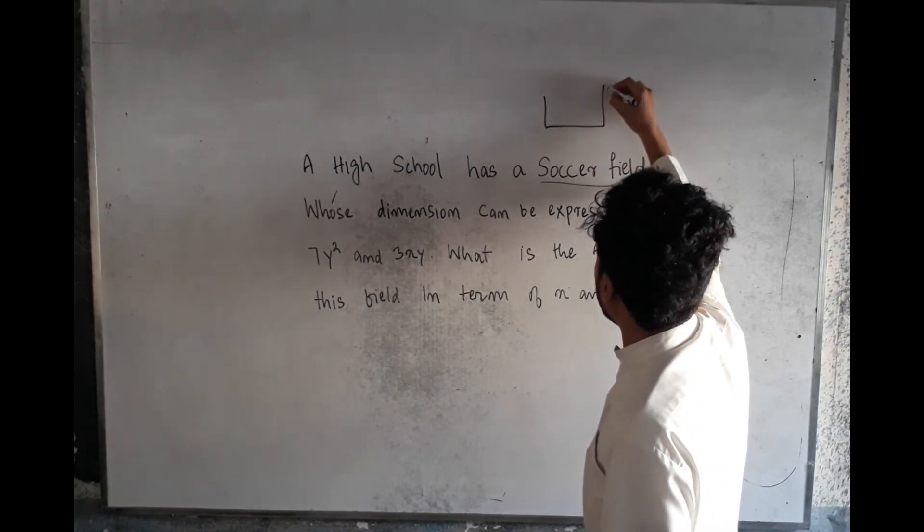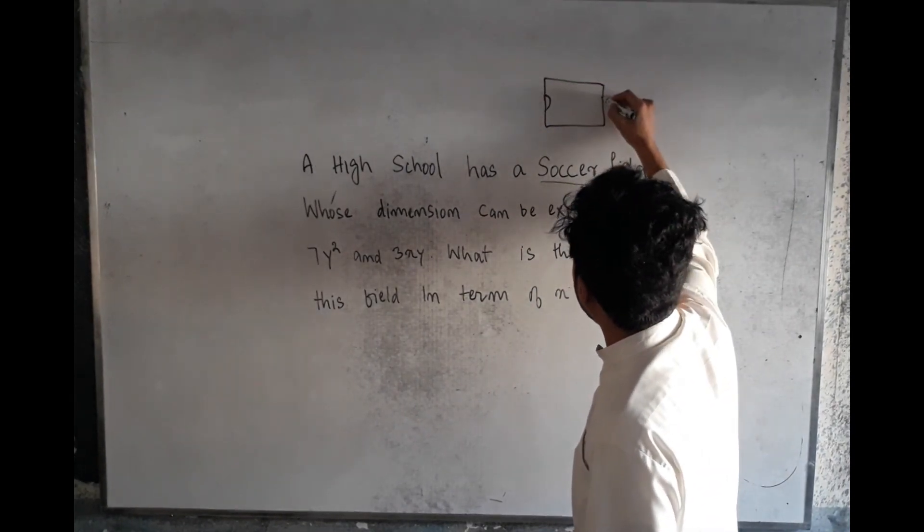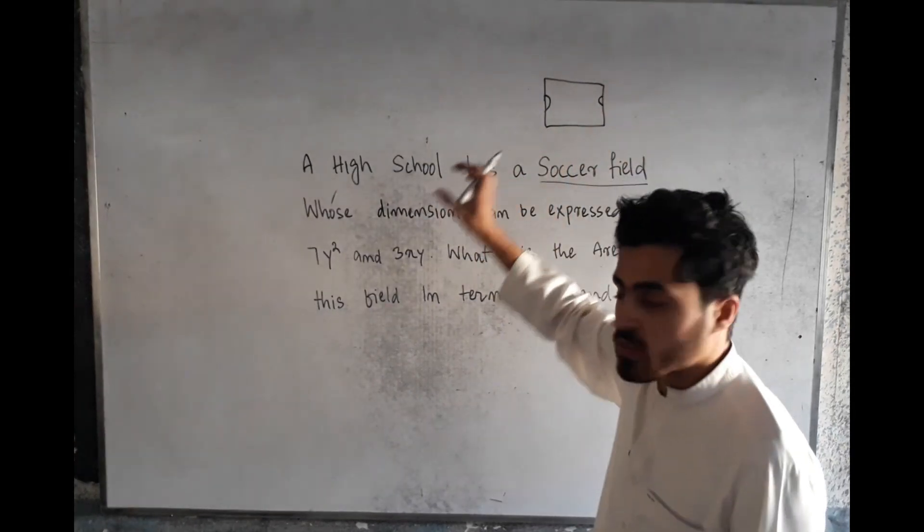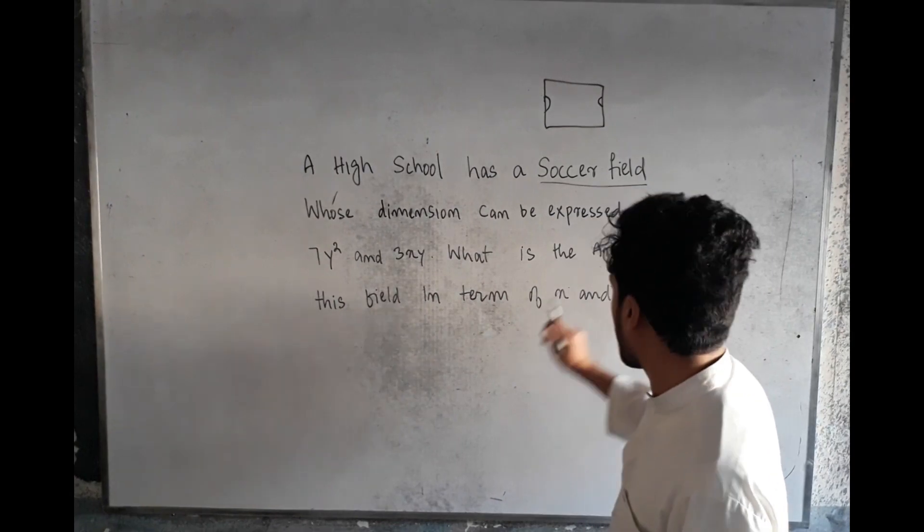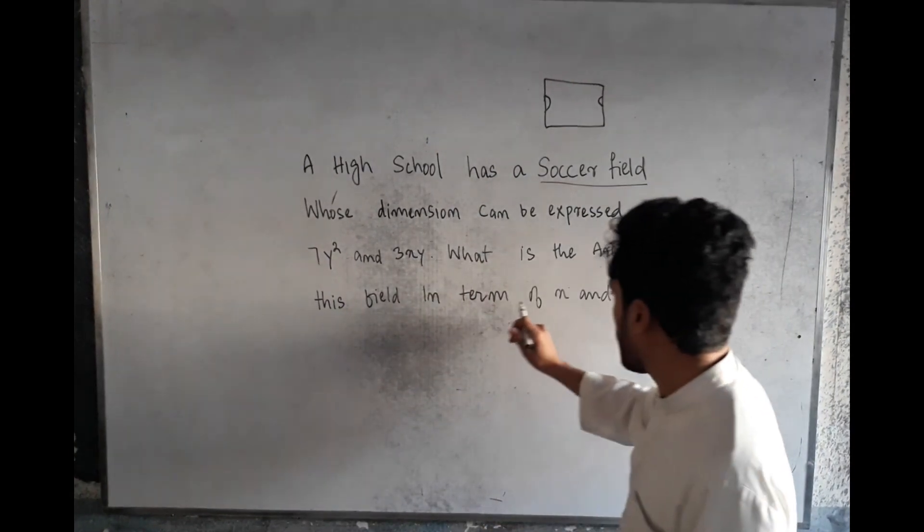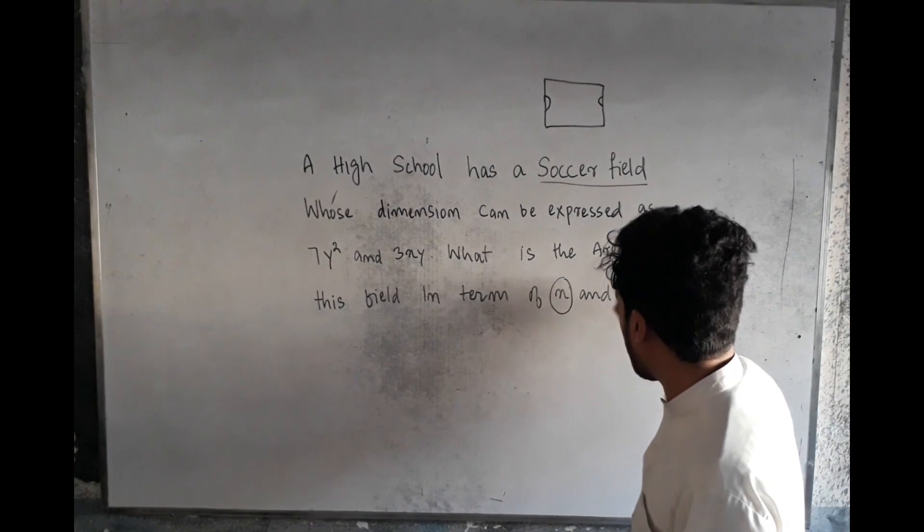So you have sides which are 7y² and 3xy. We may assume that...